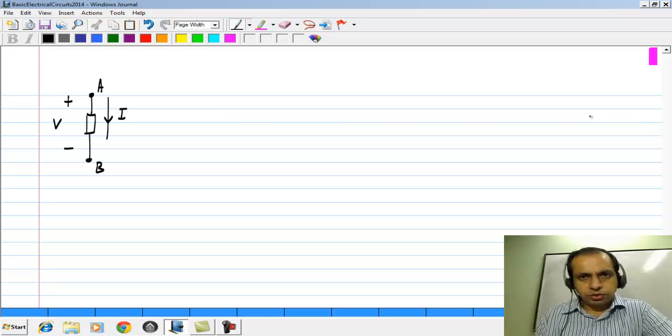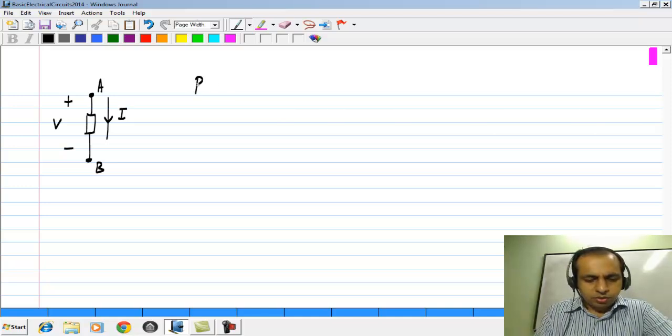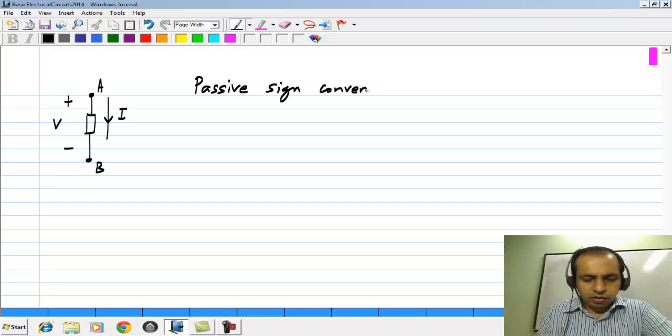There is a particular convention that is used for defining the current and voltage that is known as the passive sign convention.